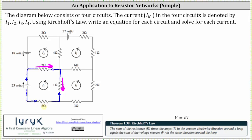Beginning at the resistor of five ohms, we have five I sub one, plus at the resistor of one ohm, we have plus I sub one. But because current I sub four is flowing in the opposite direction, we have minus I sub four, and then plus two I sub one. The current I sub two is flowing in the opposite direction, so we have minus two I sub two. Notice how the volts are flowing in the opposite direction, and therefore this is equal to negative 23.